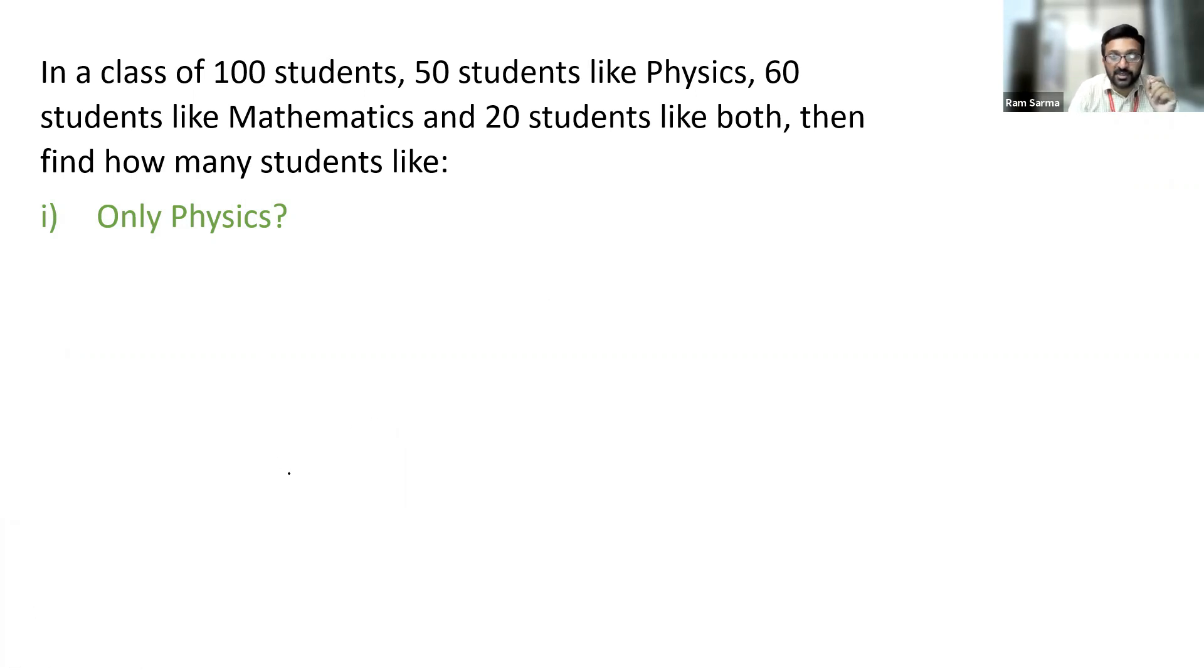In a class of 100 students, 50 students like physics, 60 students like math and 20 students like both. Then find how many students like only physics.